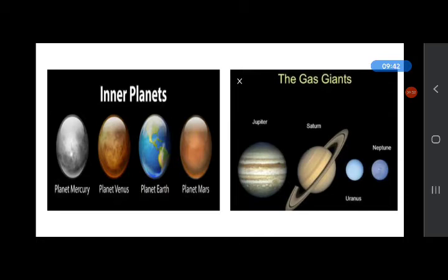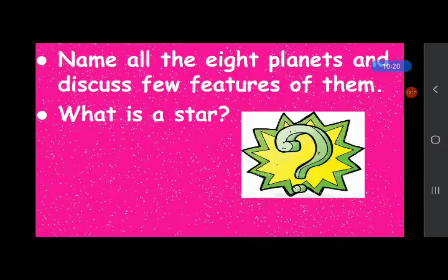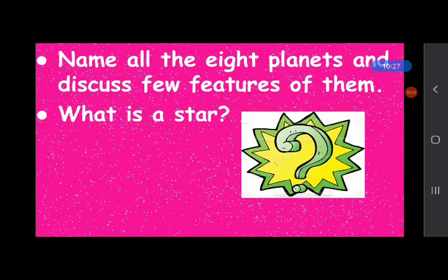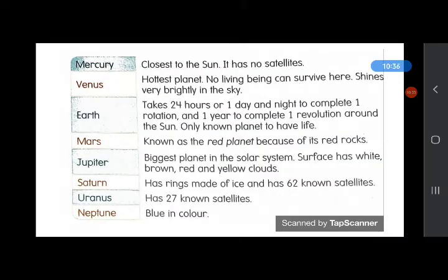Pluto was considered a planet, but now it's neither a planet nor a satellite. Many planets in the solar system have satellites. What is a satellite? A satellite is an object which moves around a bigger object. Earth's satellite is the moon. The moon moves around the Earth because moon is the satellite of Earth. Now, name all the eight planets and discuss few features of them and answer what is a star.